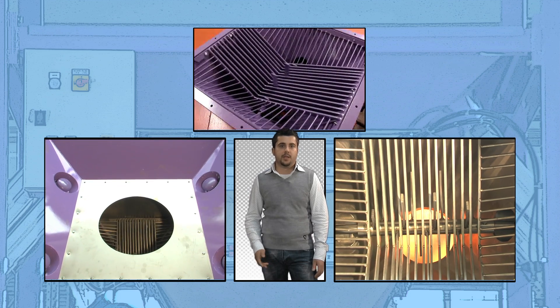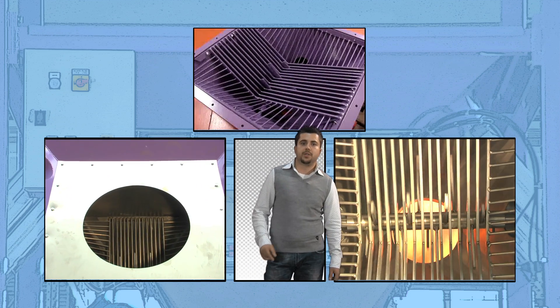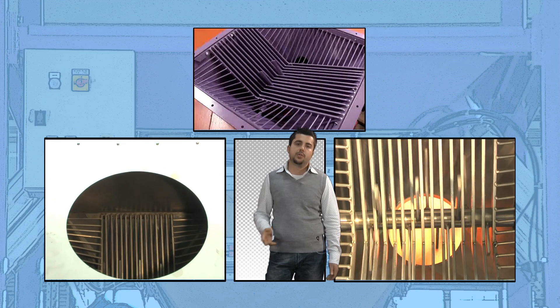For materials which tend to clog, a lump breaker can be installed inside the hopper cone which will break up the material.